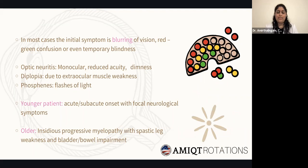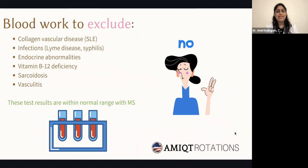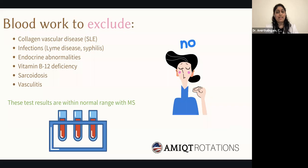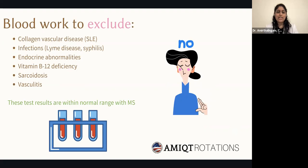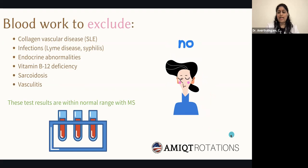For the diagnosis: since symptoms can come and go at different points in time and space, there are four important modalities to consider — blood work, CSF, MRI, and evoked potential. Blood work is important to exclude medical conditions that may mimic multiple sclerosis, such as autoimmune conditions, infections, collagen vascular diseases, endocrine abnormalities, and sarcoidosis. Generally, these results will be normal in patients with multiple sclerosis.